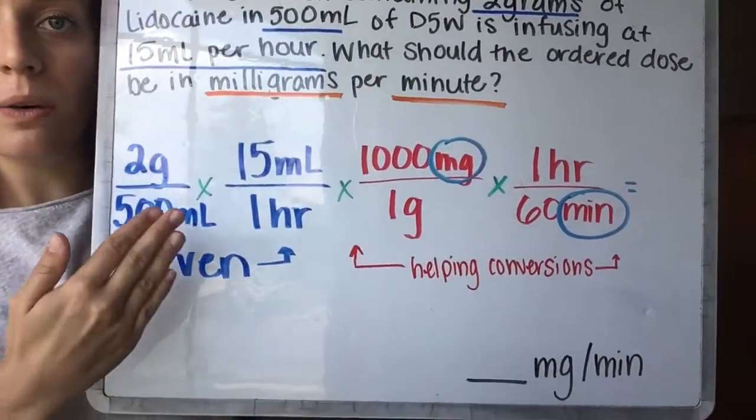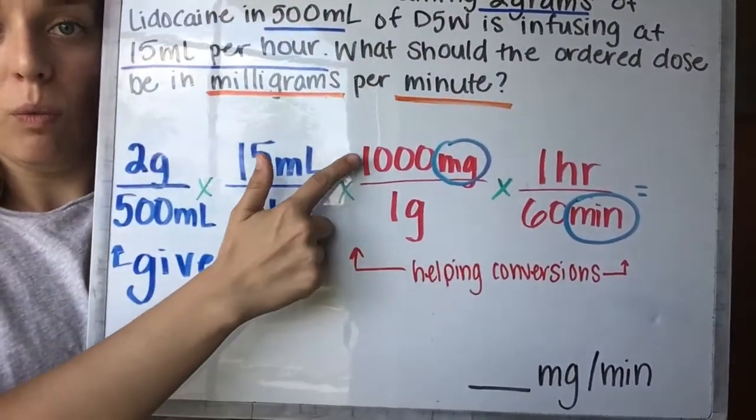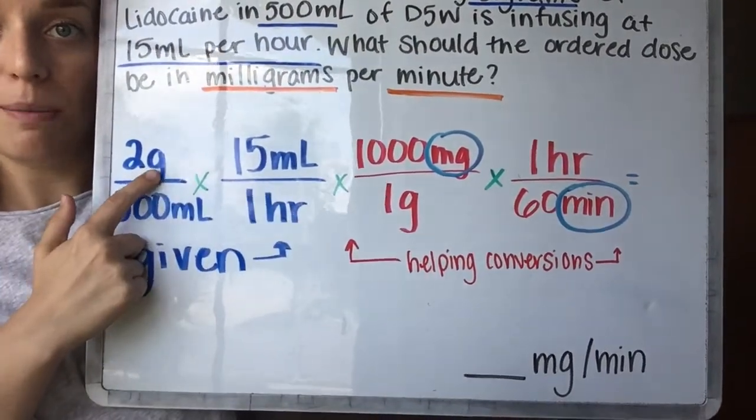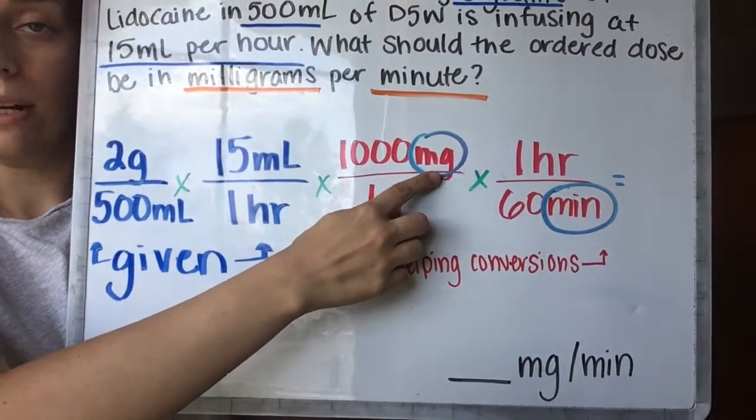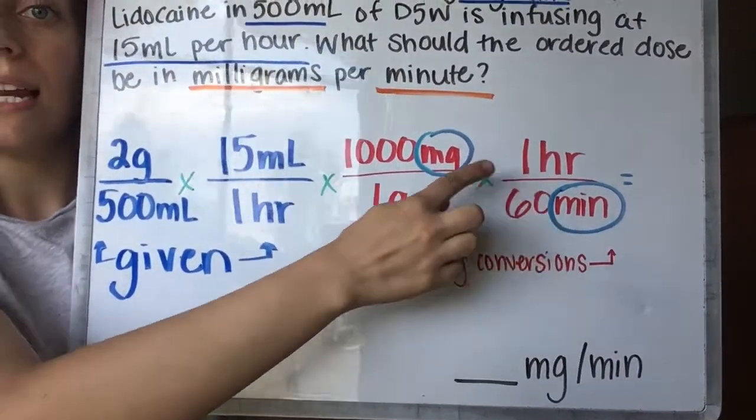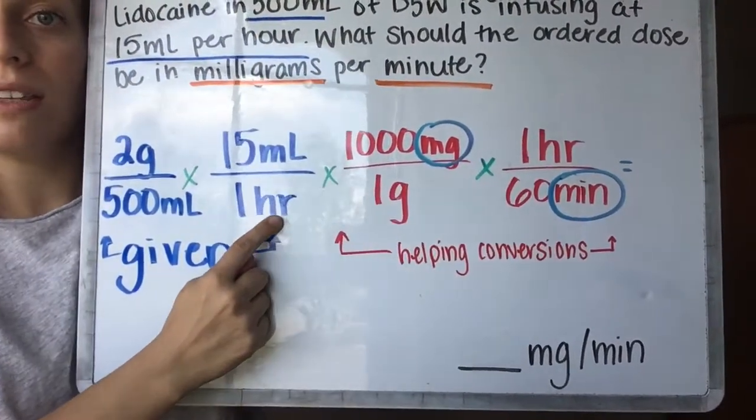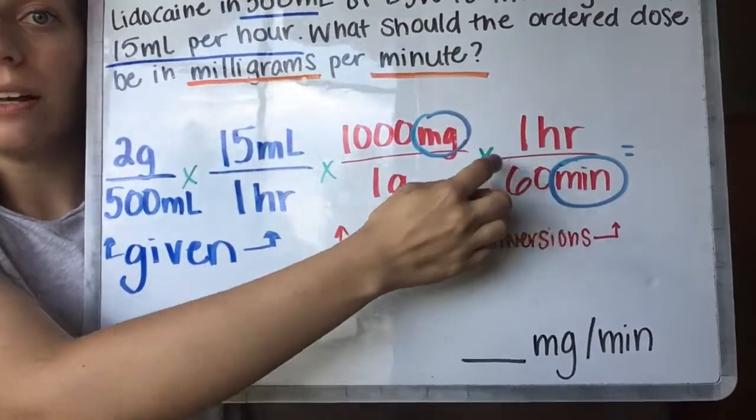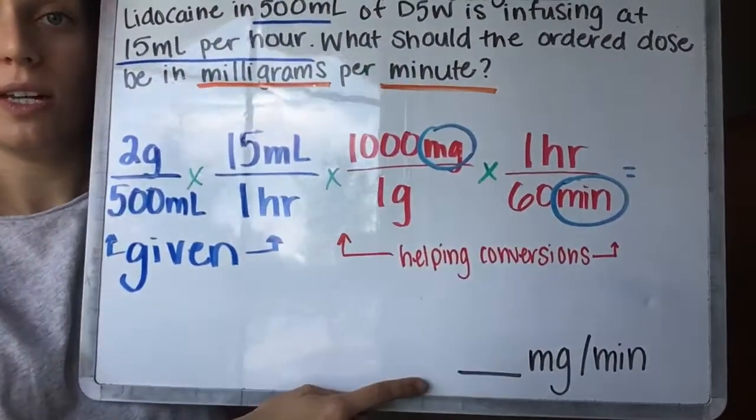So now we have exactly what we need. I have 1000 milligrams of a gram that is going to get rid of this gram over here and instead give us milligrams. And we have minutes in an hour over here that's going to cancel out this hour. We've got a top and a bottom hour, and we are going to be able to cancel out hours and land on minutes, just like we need in our final problem. So we're going to multiply straight across, and then we are going to end with our milligrams per minute. So we're almost there.